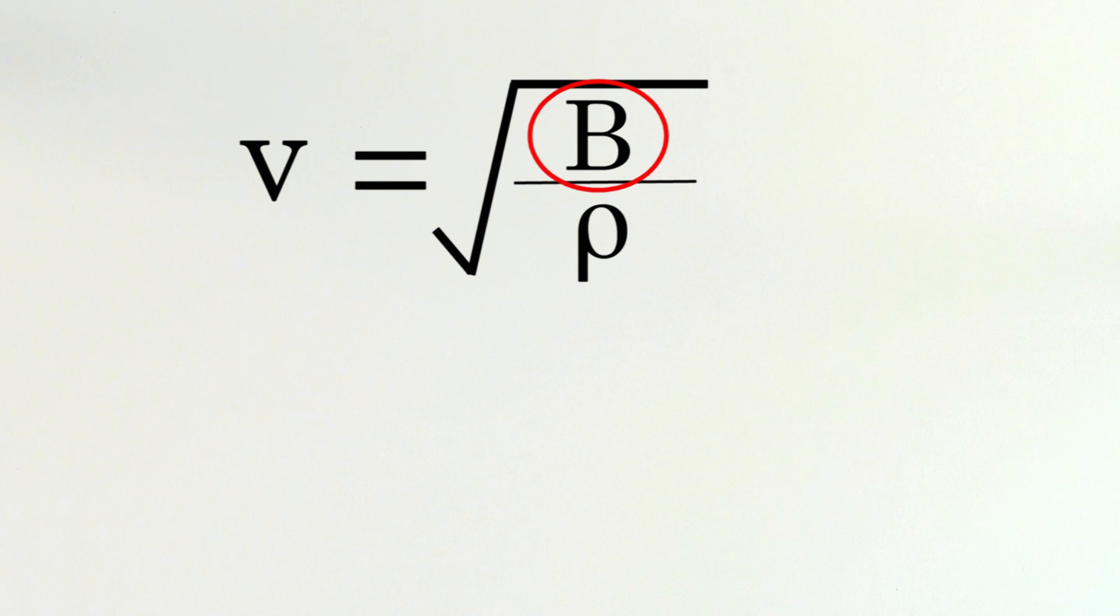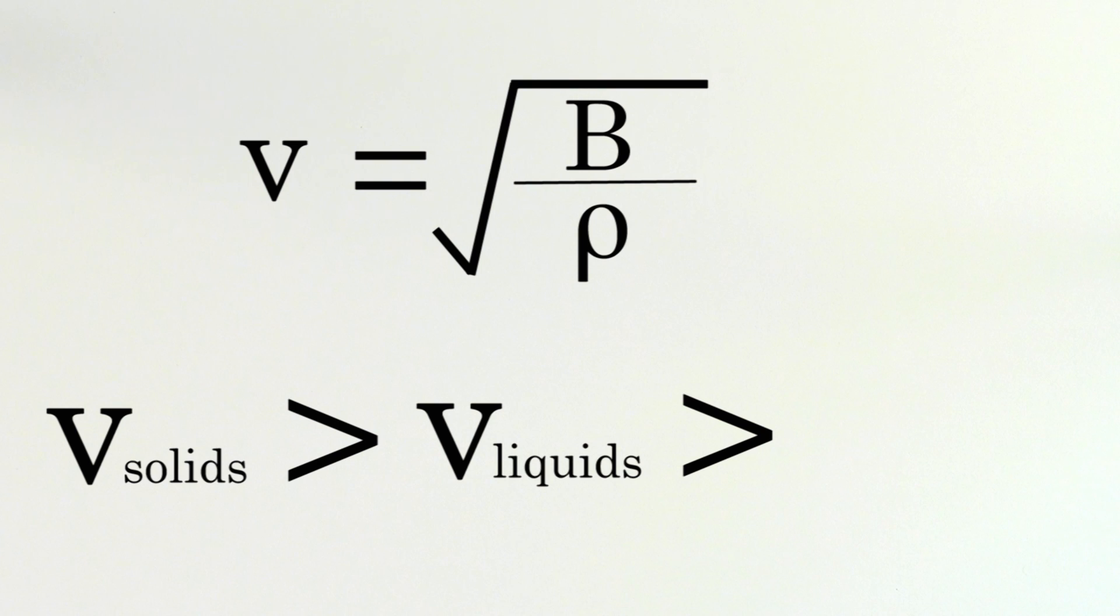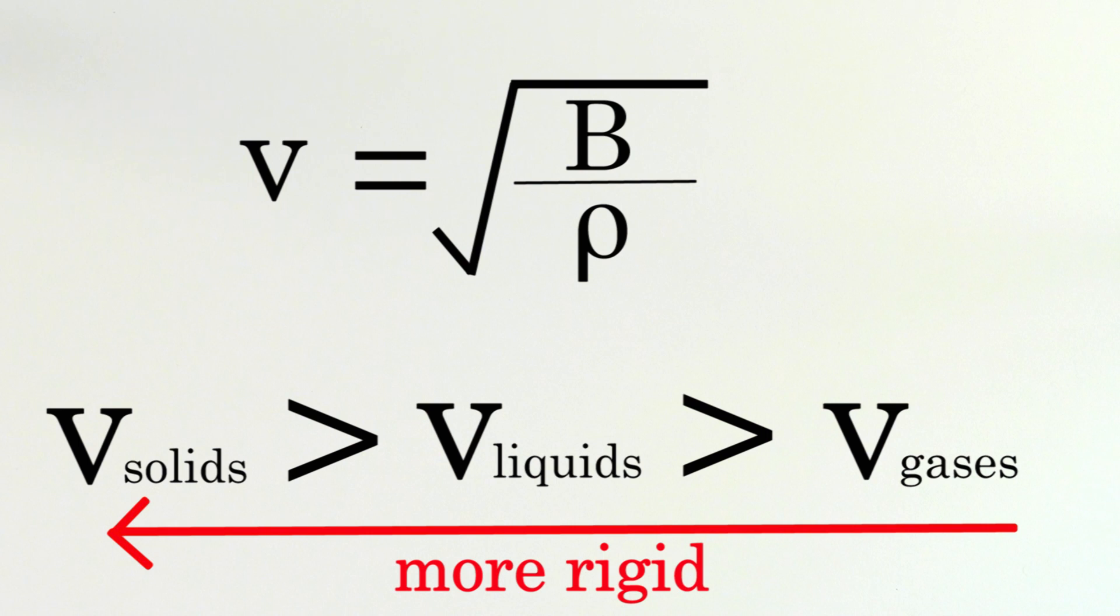In fact, the larger bulk modulus of more rigid materials usually compensates for any larger densities. Because of this fact, the speed of sound is almost always faster through solids than it is through liquids, and faster through liquids than it is through gases, because solids are more rigid than liquids, and liquids are more rigid than gases.